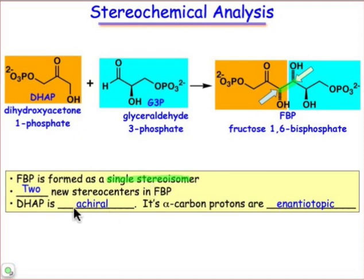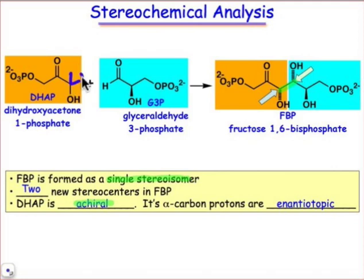Interestingly, one substrate — dihydroxyacetone 1-phosphate — is an achiral molecule. Somehow we've taken this achiral molecule and converted it into a chiral product. Notice that the two hydrogen atoms present on dihydroxyacetone 1-phosphate, if you go ahead and do the CIP test or some other method, you'll recognize those as being enantiotopic hydrogens. That's a prochiral center and a prostereogenic center as well.